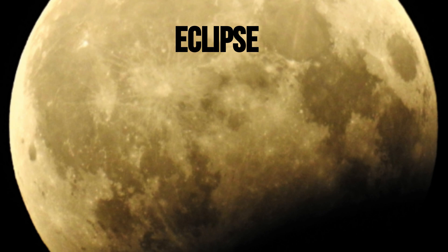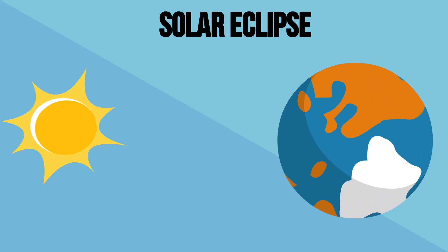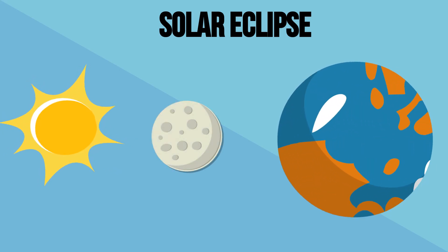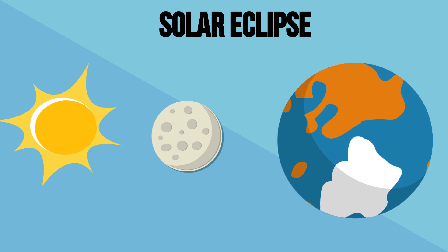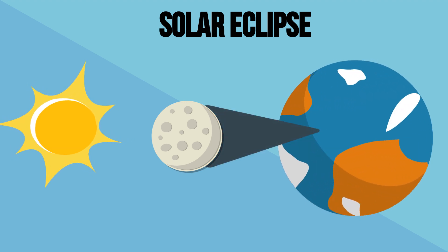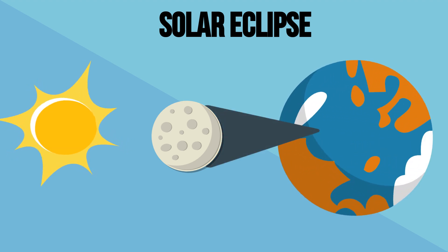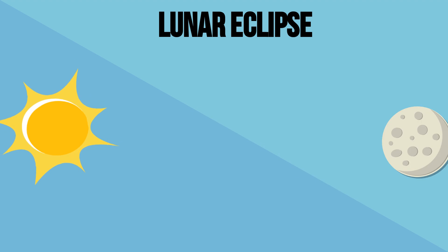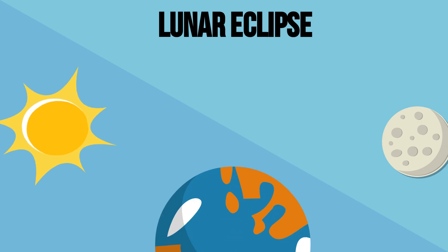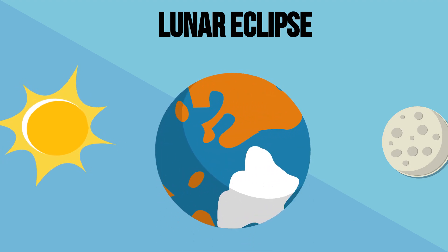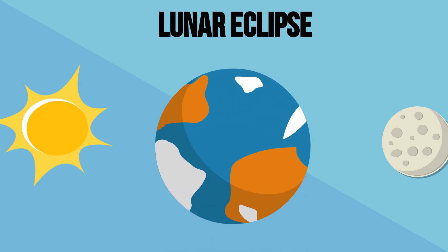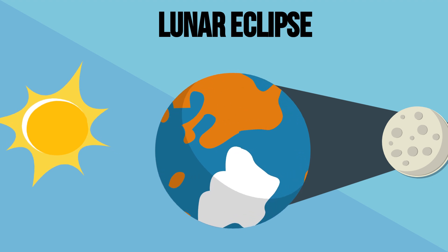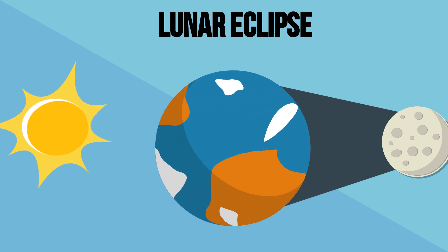A solar eclipse happens when the moon comes between the earth and the sun, and the shadow of the moon falls on part of the earth. A lunar eclipse happens when the earth comes between the sun and the moon, and the shadow of the earth falls on the moon.